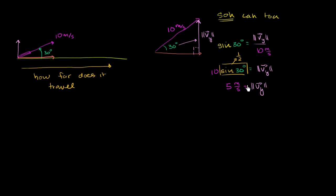This projectile, because its vertical component is 5 meters per second, will stay in the air the same amount of time as anything that has a vertical component of 5 meters per second. If you threw a rock straight up at 5 meters per second, it would stay in the air just as long, because they have the same vertical component. So let's think about how long it will stay in the air. Since we're starting at the ground and finishing at the same elevation, and air resistance is negligible, we can do a simplification here.